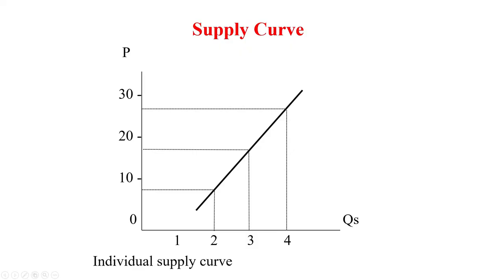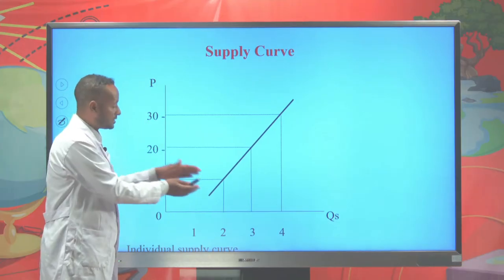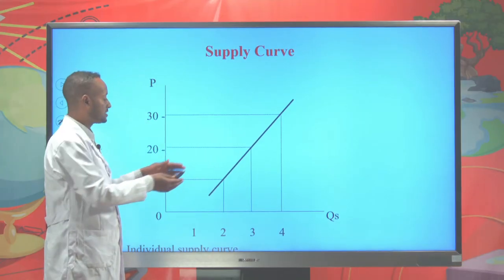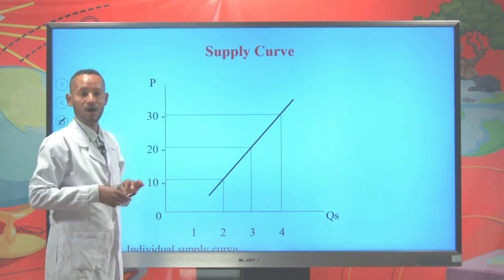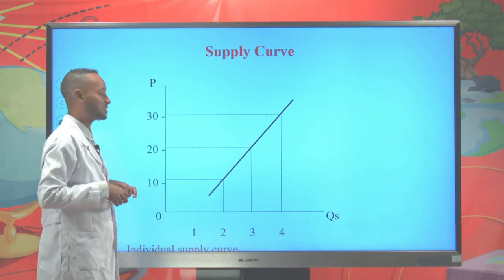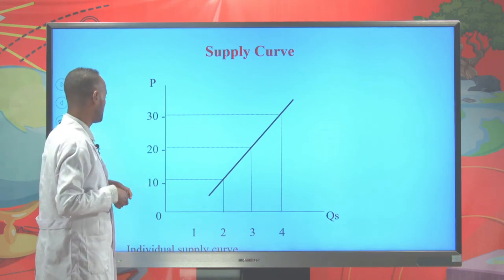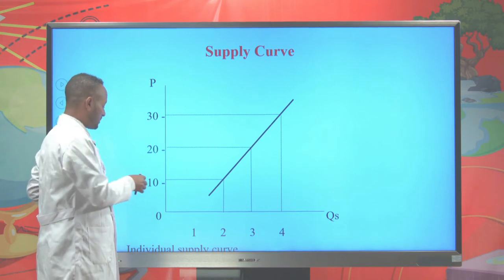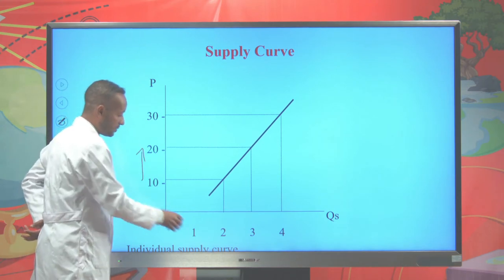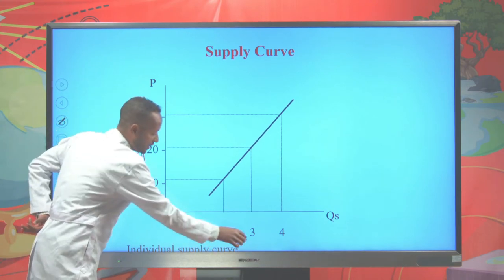Now let's see the supply schedule. We represent all the values of the market price and the values of the quantity supplied in the X and Y axes to plot the supply curve. As price increases, then quantity supplied will also increase.